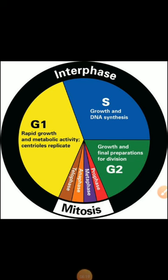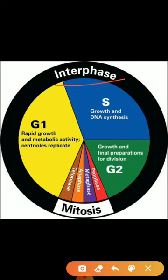Next, we can discuss the cell cycle. What is a cell cycle? It is the time period from one cell division to the next cell division. It has two main phases. First one is the non-dividing phase, which we call interphase. The second one is the dividing phase, which we call M phase or mitosis. Interphase itself has three phases: G1 phase (first growth phase or gap 1), S phase (synthesis phase), and G2 phase (second growth phase).